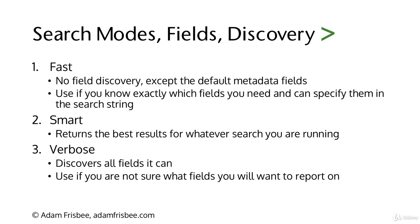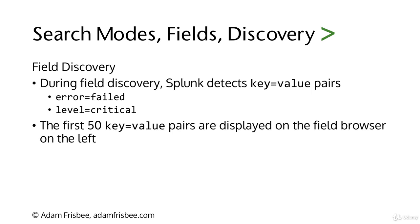So Smart Mode and Verbose Mode use Splunk's engine to discover fields. But how does that actually happen? During field discovery, Splunk detects fields that are key-value pairs. That's what a field is in Splunk — key equals value. So 'error equals failed' or 'level equals critical' would be examples of fields. Anything equals anything — that's an example of a field as well.